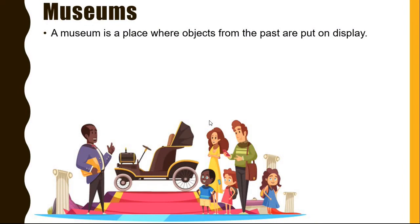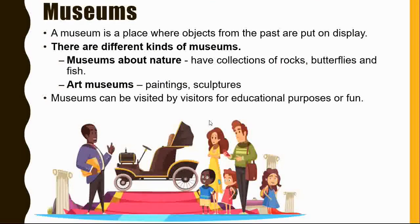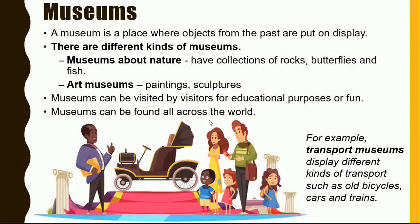Museums. A museum is a place where objects from the past are put on display. There are different kinds of museums. There are museums about nature — they have collections of rocks, butterflies and fish. Art museums have paintings and sculptures. Museums can be visited by visitors for educational purposes or for fun, and museums can be found all across the world. For example, transport museums display different kinds of transport, such as old bicycles, cars and trains.